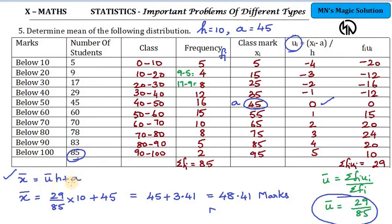Direct method means sigma fi xi divided by sigma fi. Instead of that, you are using fi ui divided by sigma fi because you get u bar from out of this. Then from u bar, you remanipulate to get the answer. So the final answer for this problem is 48.41 marks.